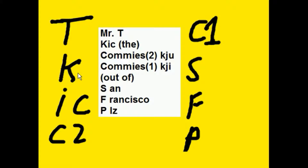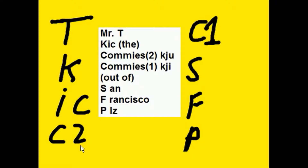So in order: timer, keyboard, interrupt controller, comm 2, comm 1, sound card, floppy disk controller, and the parallel port. Mr. T, kick commie 2 and commie 1 out of San Francisco, please.